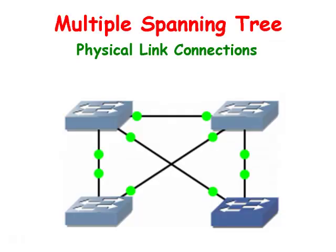We looked at the Per-VLAN spanning tree in a previous video. This protocol results in a direct one-to-one mapping of spanning tree instances to VLANs. For example, if there were 20 VLANs on a switch, the switch must participate in 20 independent spanning trees. This is often undesirable because each spanning tree instance takes away a certain amount of memory and CPU processing power.